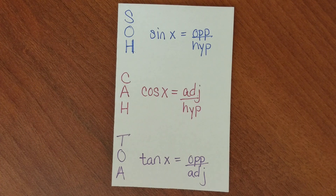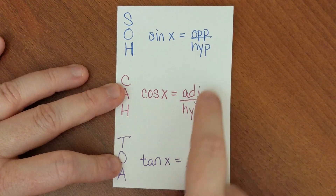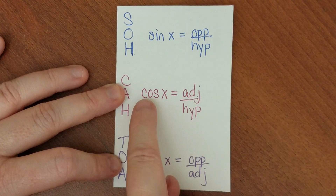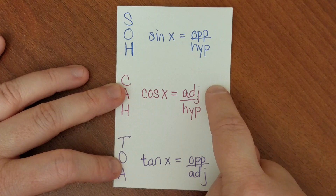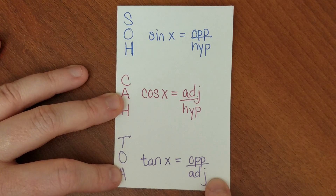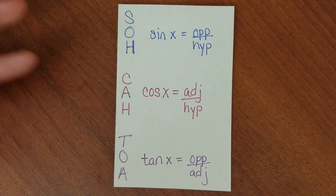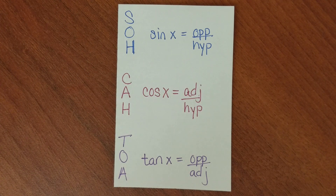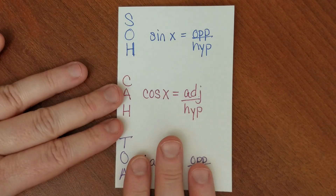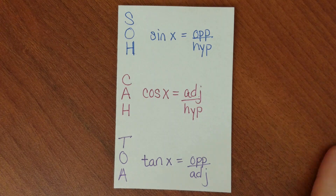SOHCAHTOA is a simple way to remember that the sine of an angle is equal to the opposite over the hypotenuse. The cosine of an angle is equal to the adjacent side divided by the hypotenuse, and the tangent of an angle is equal to the opposite side divided by the adjacent side. This part you have to commit to memory, as well as how to accurately label the opposite, adjacent, and hypotenuse on your triangle.